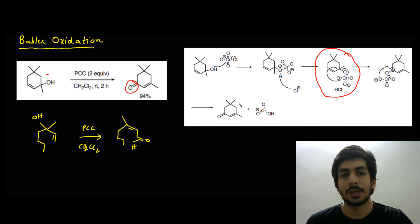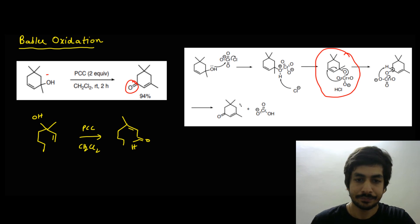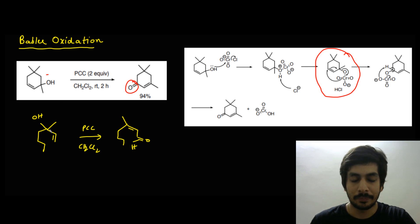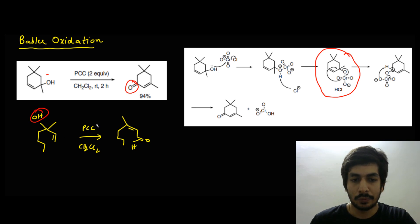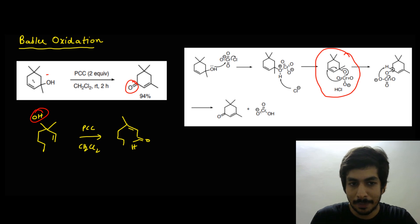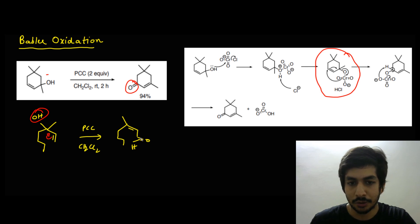Here is another example to better understand Babler oxidation. A tertiary allylic alcohol is treated with PCC in dichloromethane. The double bond migrates, and oxidation occurs at the terminal end, yielding an aldehyde. Similarly, in this example, the double bond migrates and oxidation occurs at the terminal carbon to give an aldehyde. This is a very important transformation.